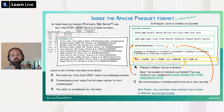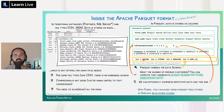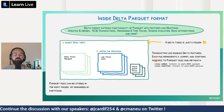The Parquet format also describes the structure of the data — there's metadata at the end of the Parquet file indicating which columns are present, where they start and end, the data types, and so on. That's a quick introduction to Apache Parquet, which is important because, as Josh said, Parquet is the basis of the Delta file format, which is also an open source format.